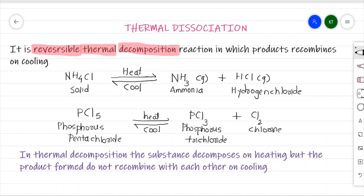The products also show a tendency to recombine with each other and form the reactant back. The major difference between thermal decomposition and thermal dissociation is that in thermal decomposition, reactants get converted into products but the products do not show any tendency to recombine back with each other to give the reactant back. That is the key difference. Thank you for watching.